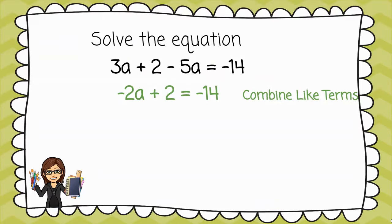Now we can focus on solving. We're going to do the opposite of adding 2 to both sides, which would be to subtract 2. That leaves me with negative 2a equals negative 16.